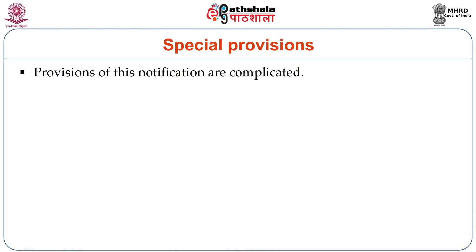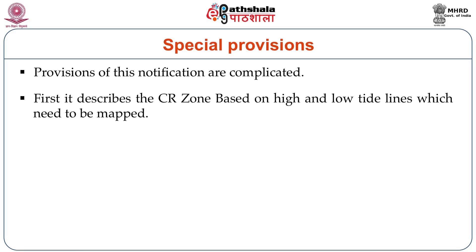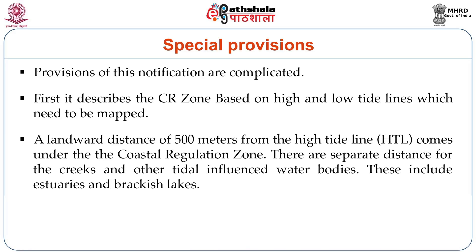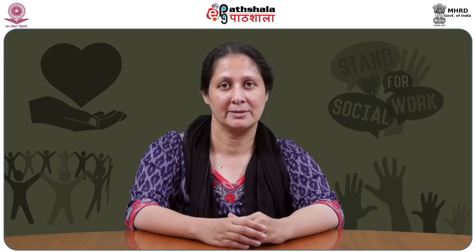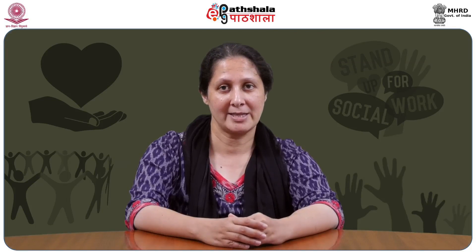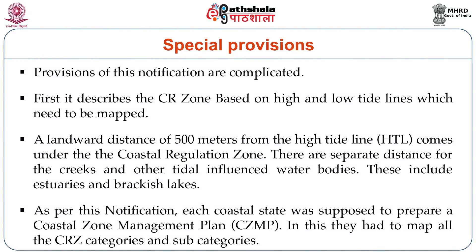Provisions of this notification are quite complicated. First, it describes a coastal regulation zone based on the high and low tide lines which need to be mapped. A landward distance of 500 meters from the high tide line comes under the coastal regulation zone. There are separate distances for the creeks and other tidal-influenced water bodies, which include estuaries and brackish water lakes — Chilka is one example. As per this notification, each coastal state was supposed to prepare a coastal zone management plan, mapping all the CRZ categories and subcategories.